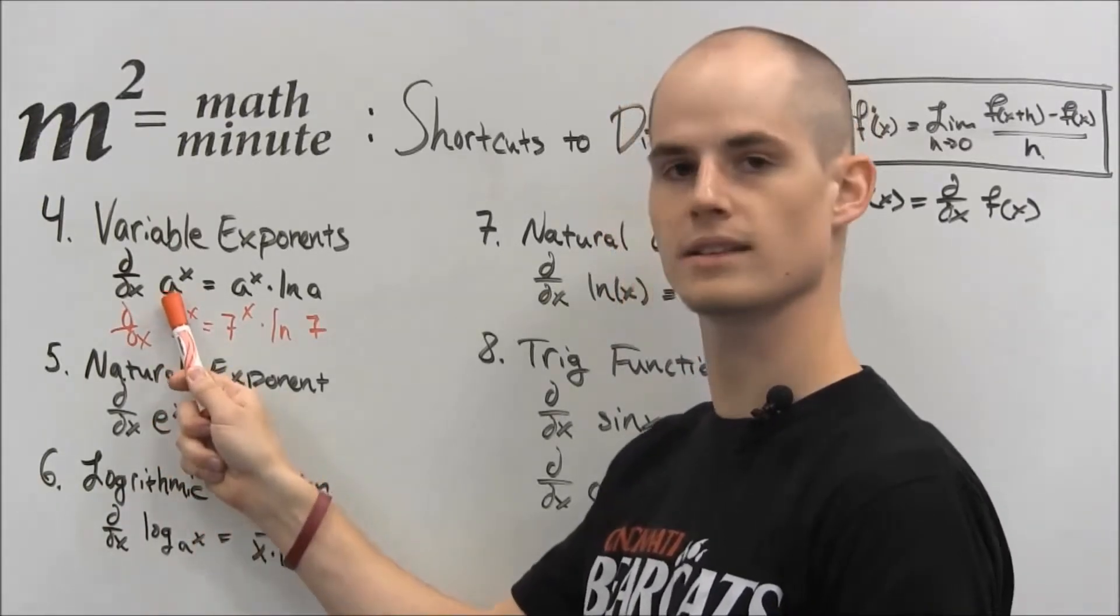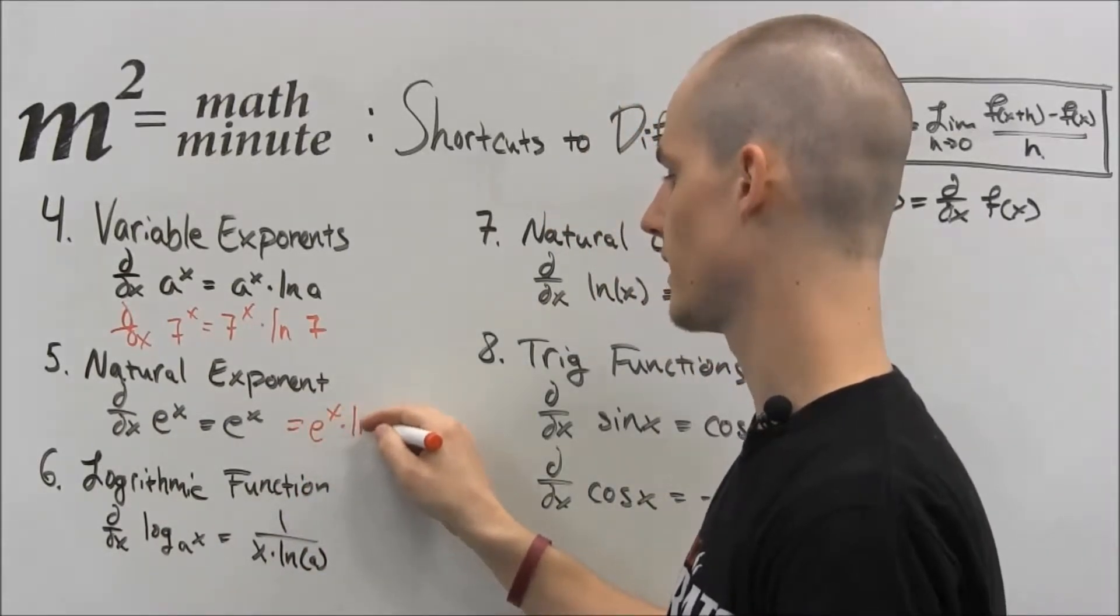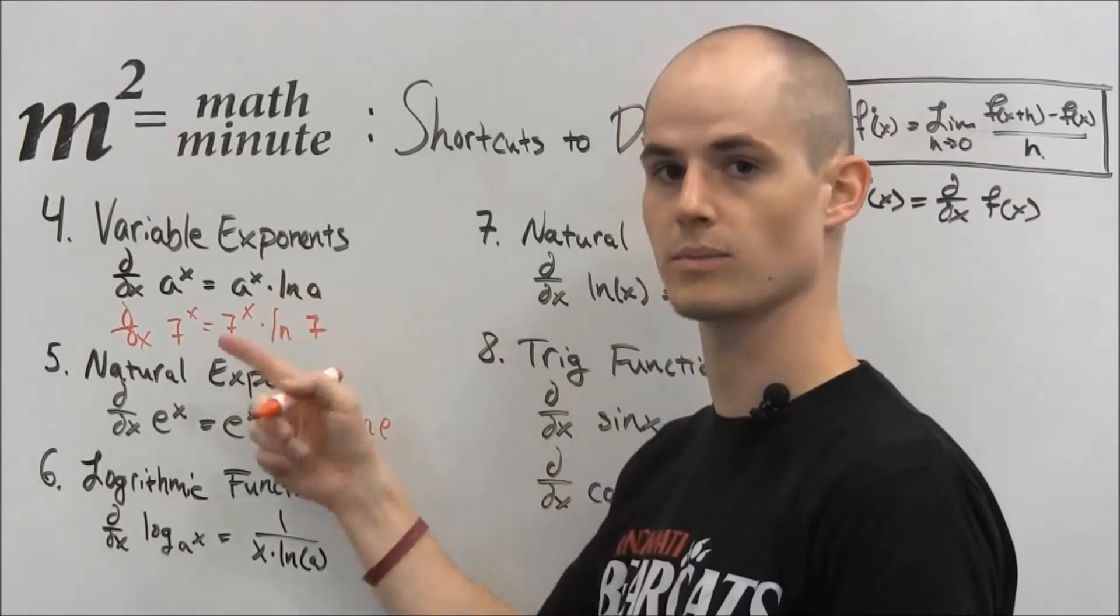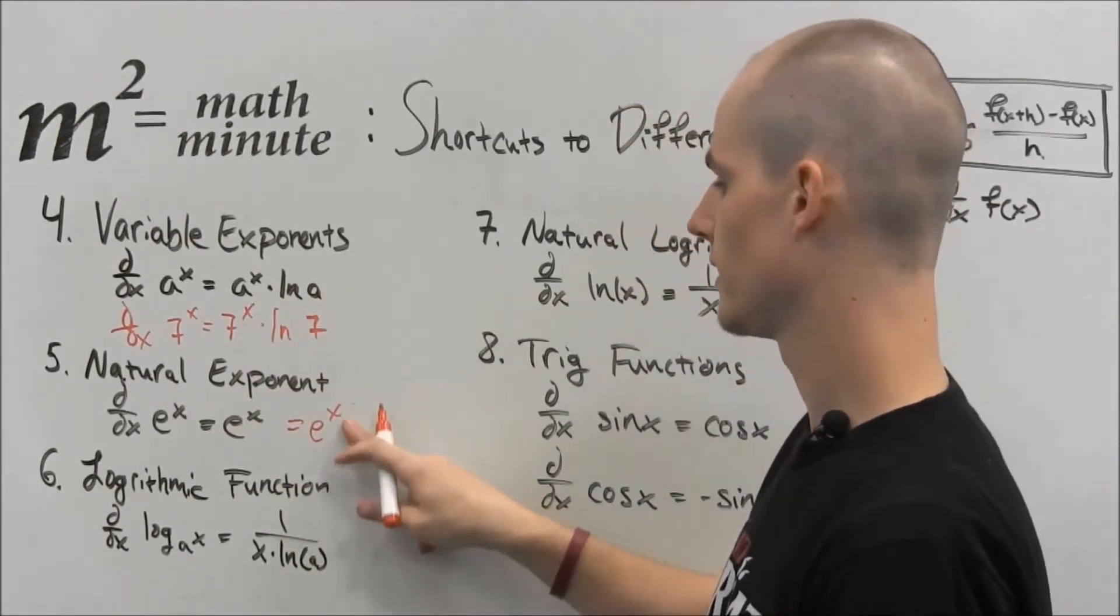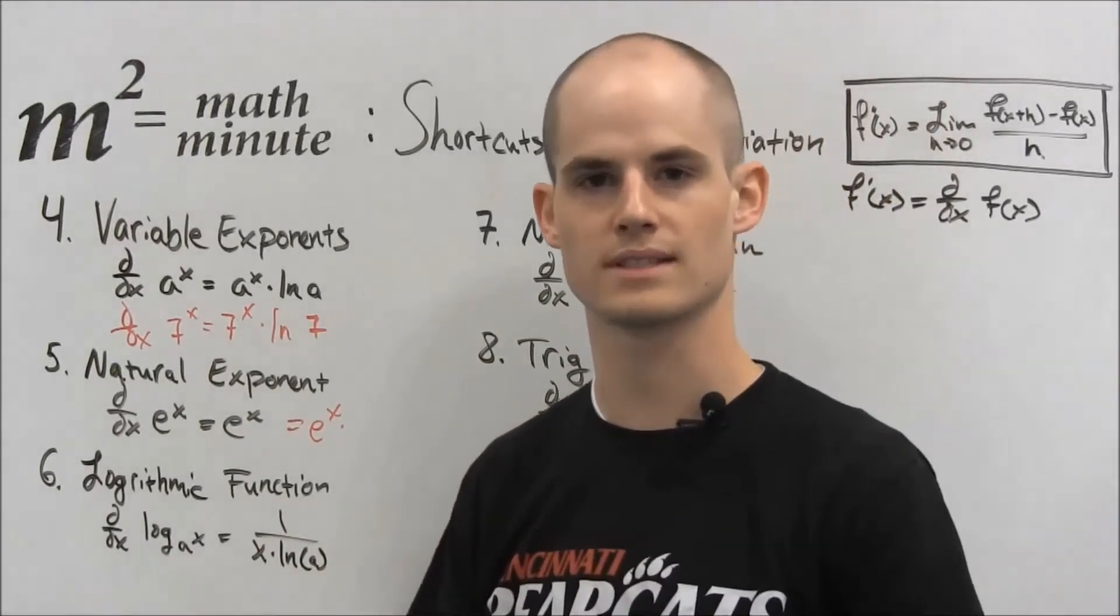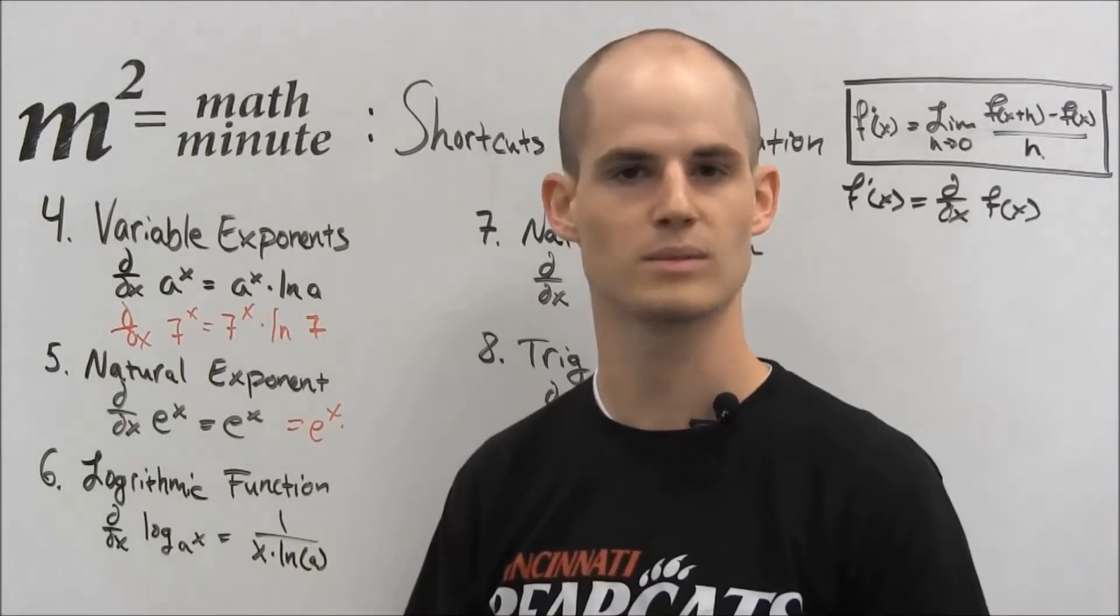So e is actually a positive constant. So we can apply e to this rule. So this would actually equal e to the x times ln of e from this if we're applying this rule. But what does ln of e equal? Just one. So now you know why it equals the same thing. It just equals e to the x. That's a really important rule to remember and it's just something you have to memorize.